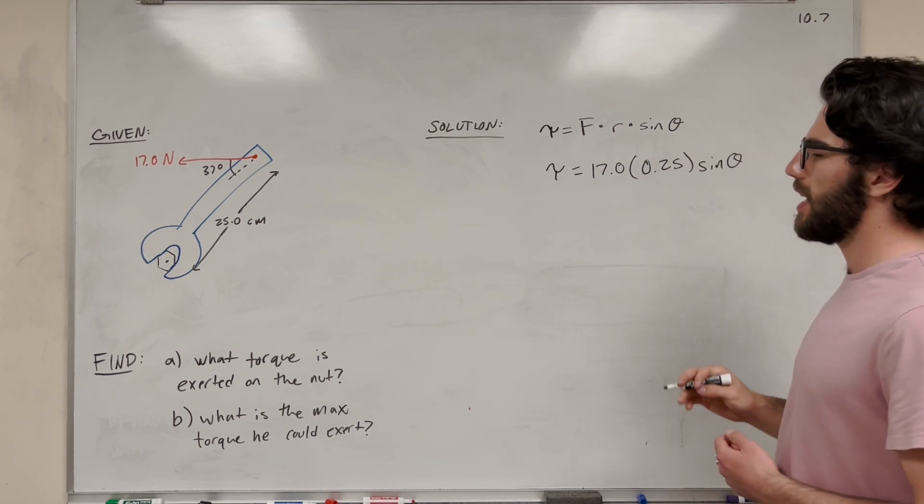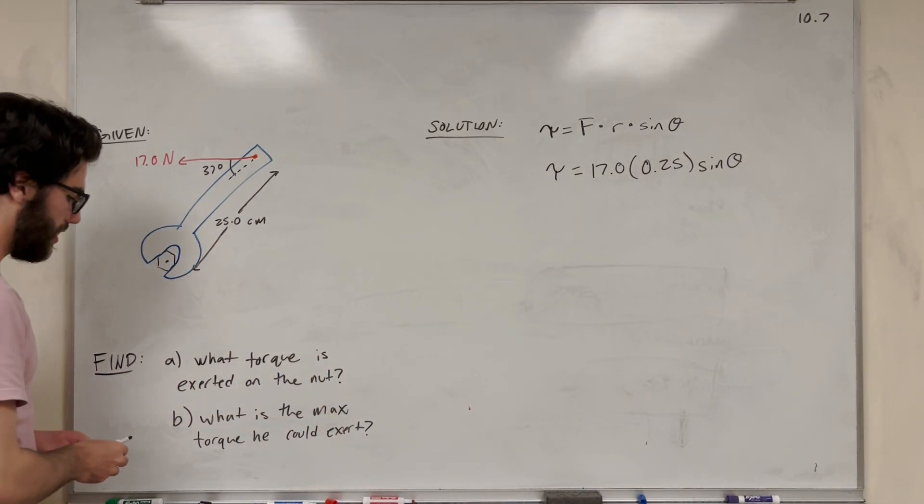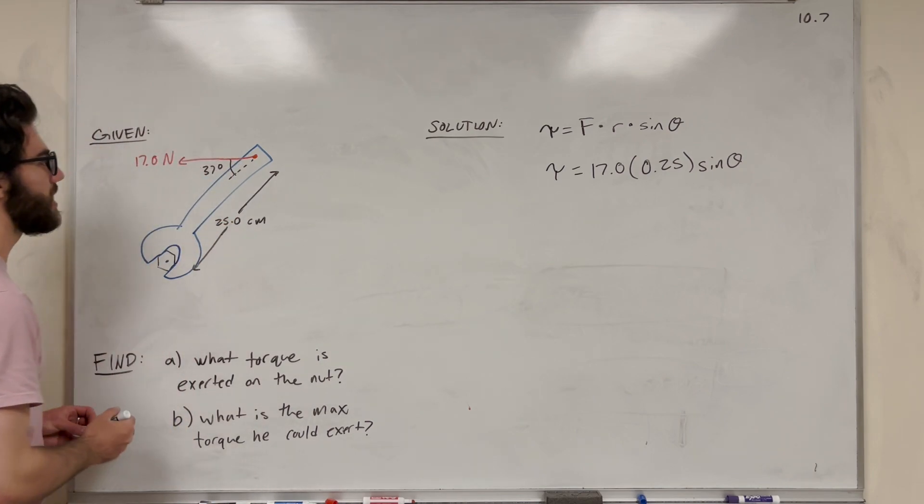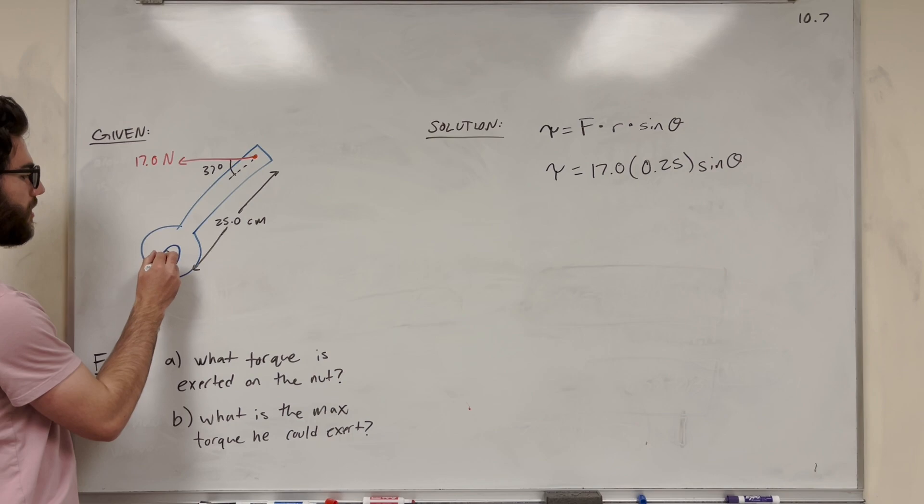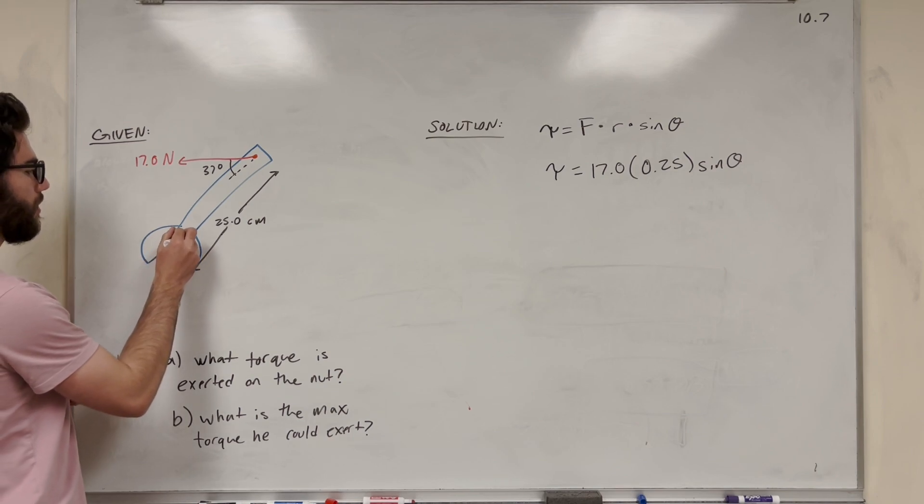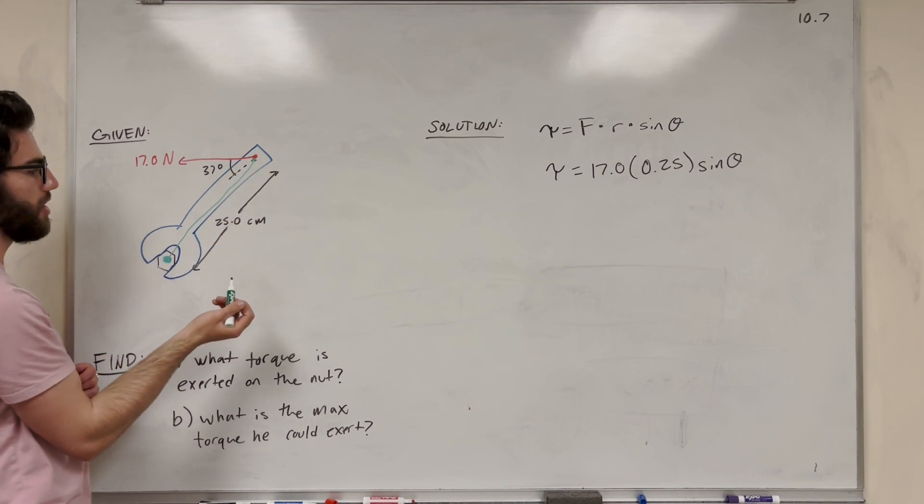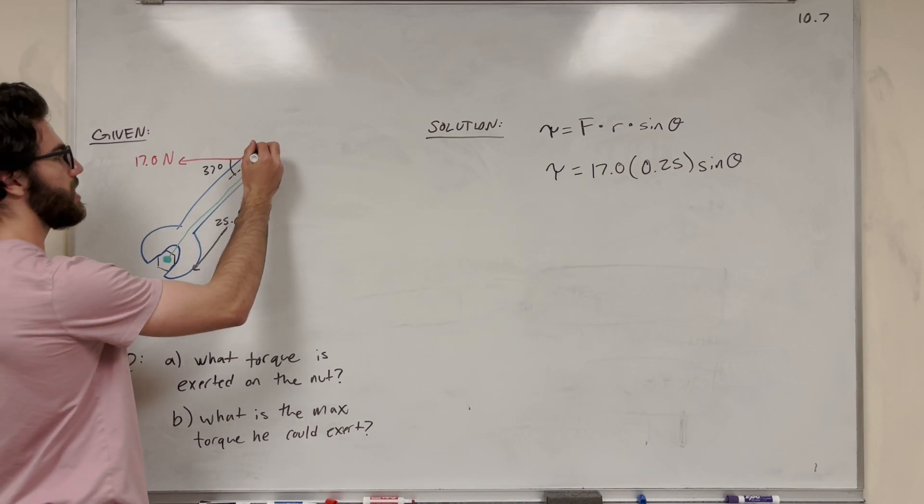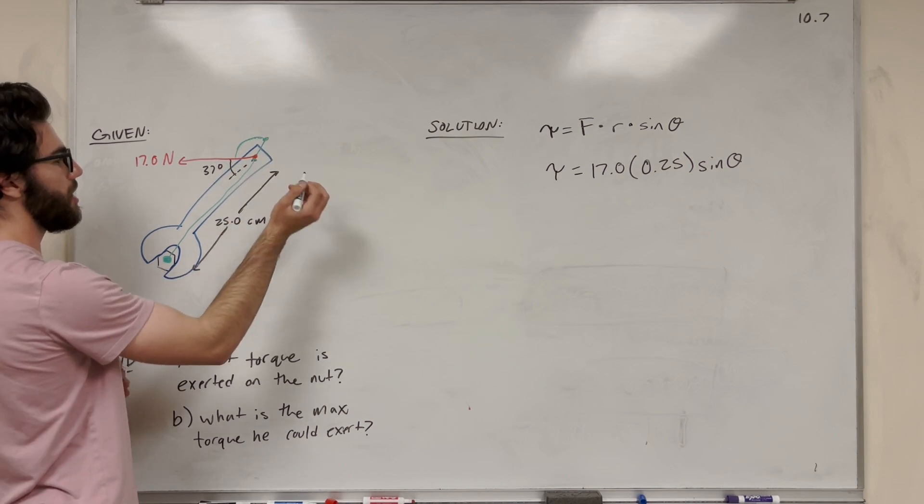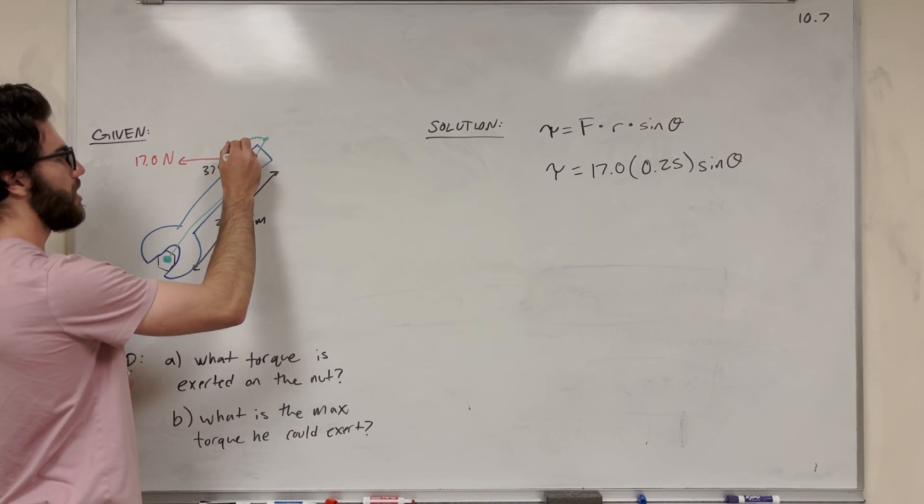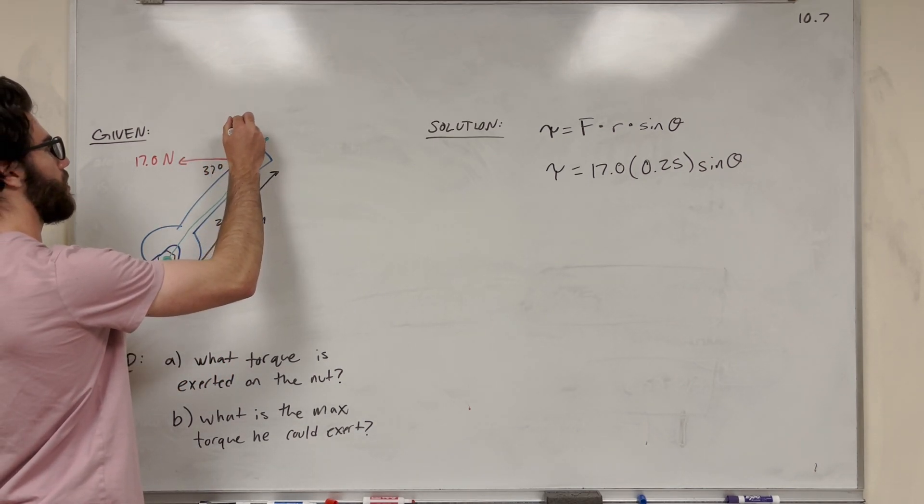And then sine of theta, well, what's that angle going to be? You might be tempted to use that 37 degree angle. However, it's not exactly that. What we're going to do is we're taking the torque from the nut. We're going to draw a line from the place we're taking the torque around until we reach this. So this is our radius here. We're going to then extend from here and draw an angle from that extended radius to the line. And so this is 180 minus 37, which is 143 degrees.